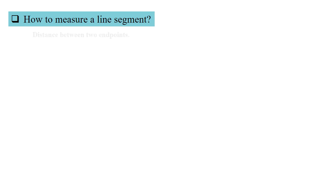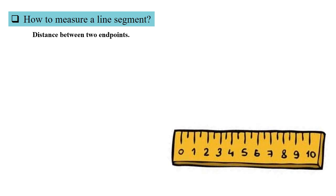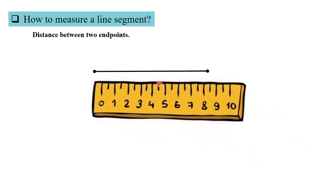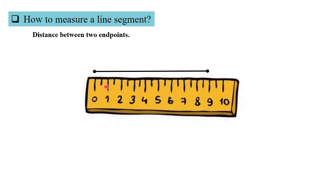How do we measure a line segment? We have to measure the distance between the two end points, and for that we use a ruler. Consider this example, segment AB. If we want to measure this line, we simply drag our scale and count the number of lines. Therefore, the measure of line segment AB equals 9 cm.